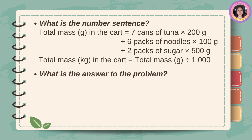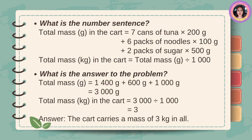Answer: Total mass in grams equals 1,400 grams plus 600 grams plus 1,000 grams equals 3,000 grams. Total mass in kilograms equals 3,000 divided by 1,000 equals 3. The cart carries a mass of 3 kilograms in all.